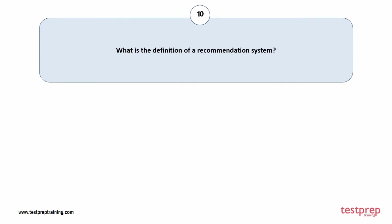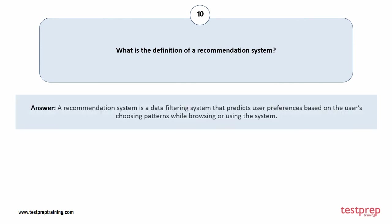Question number ten: what is a recommendation system? A recommendation system is a data filtering system that predicts user preferences based on the user's browsing or usage patterns while using the system.